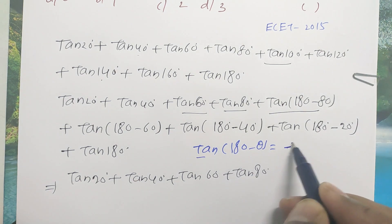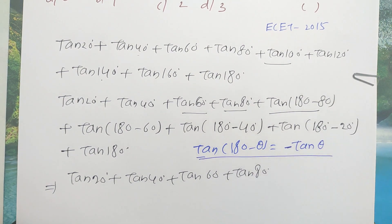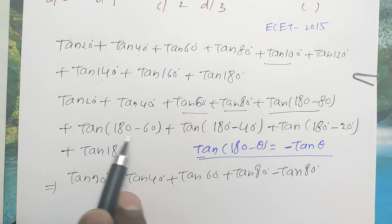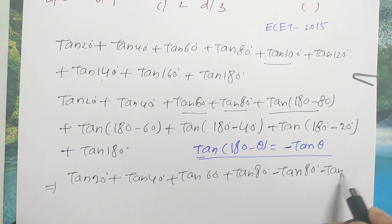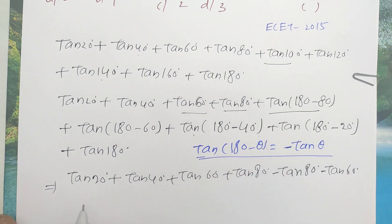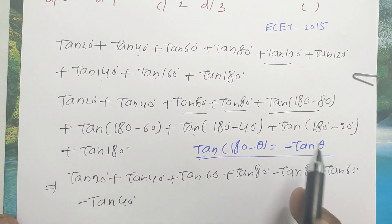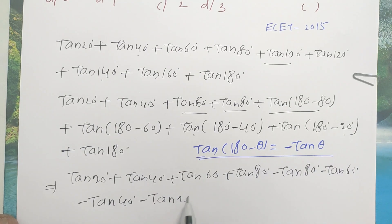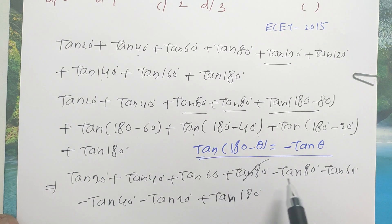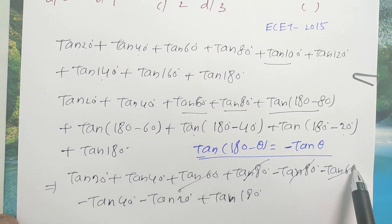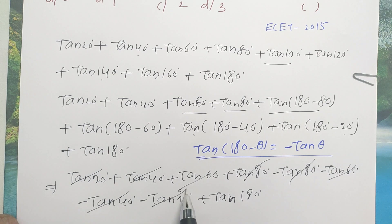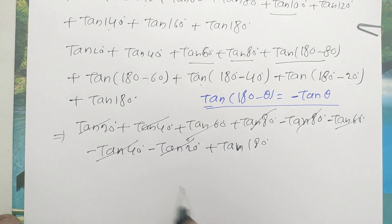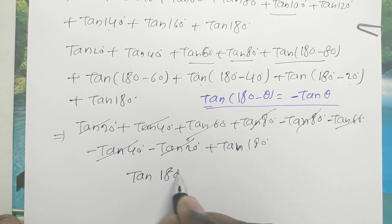So tan of 180 minus 80 equals minus tan 80, tan of 180 minus 60 equals minus tan 60, tan of 180 minus 40 equals minus tan 40, tan of 180 minus 20 equals minus tan 20. Then tan 60 and minus tan 60 cancel, tan 40 and minus tan 40 cancel, tan 20 and minus tan 20 cancel. What remains is tan 180 degrees, which equals zero.